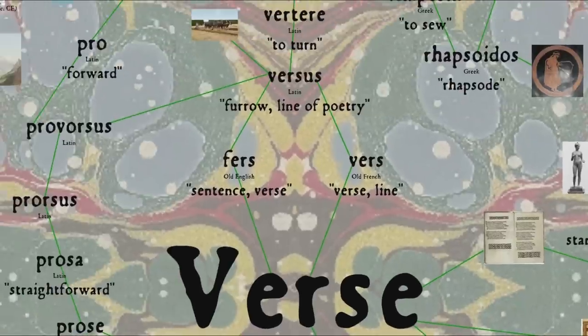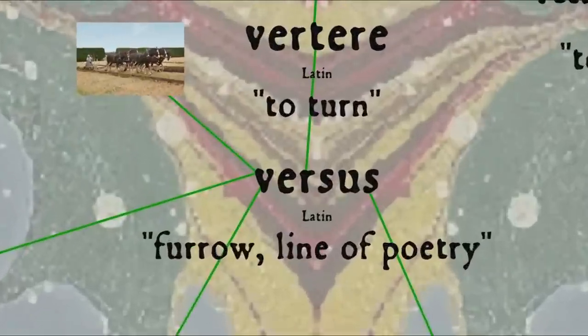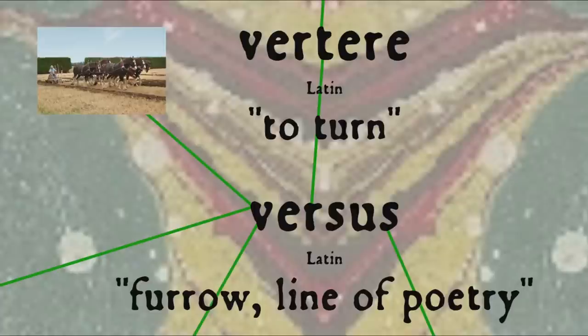The word verse literally means turned from Latin vertere to turn, and the metaphor this employs is one of plowing, reflecting the way the plow is turned at the end of each row. So Latin versus originally referred to furrows in a field, and thus metaphorically lines of poetry.